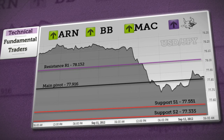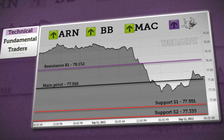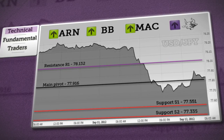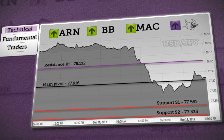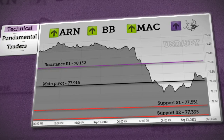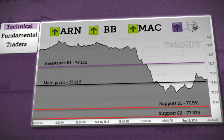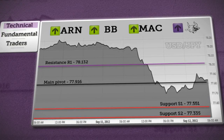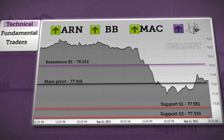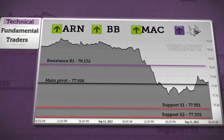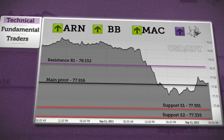But a rebound from the daily pivot will confirm further consolidation. A downtrend will be confirmed if price approaches S1 support, and in this case, a fall towards S2 is possible. Our indicators expect a bullish trend today.